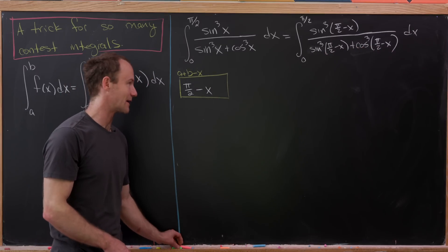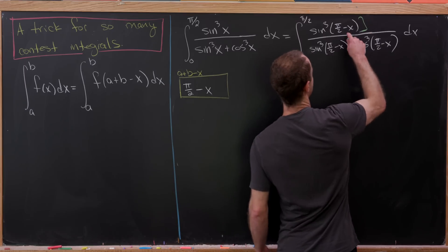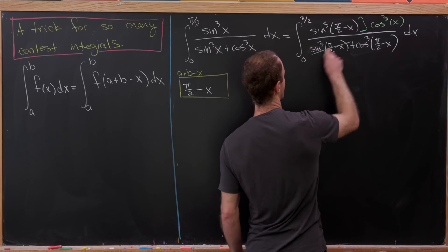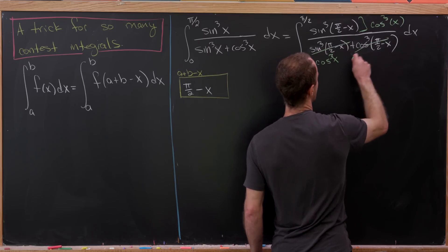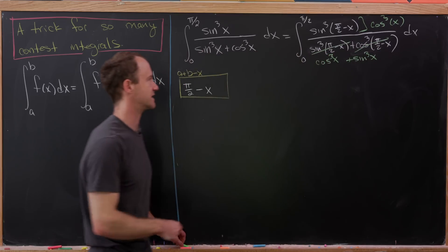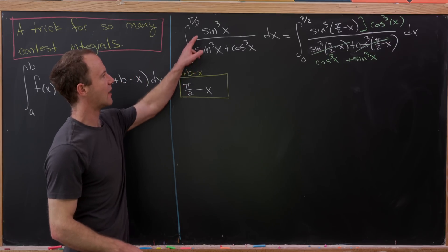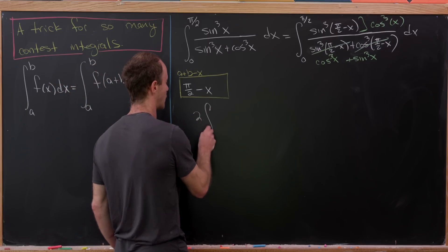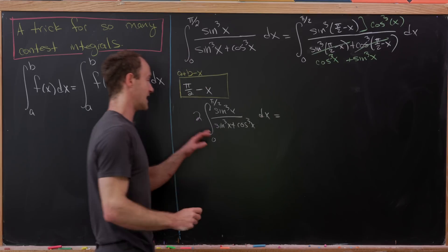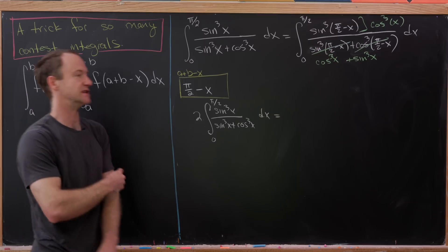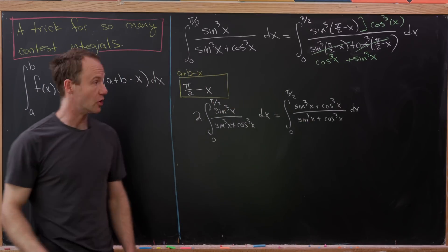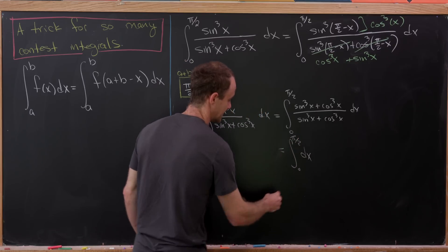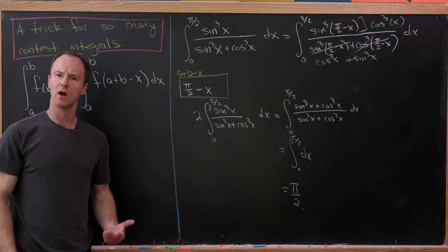There are nice identities at play here: sin(π/2 − x) = cos(x), so those terms turn into cos³(x). Likewise, cos(π/2 − x) = sin(x), so that term turns into sin³(x). Now if we add this integral to itself — one version as-is and one using our trick — the numerator becomes the same as the denominator, so we're integrating 1. That gives us 2I = π/2, so I = π/4.